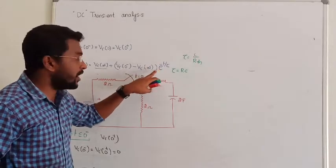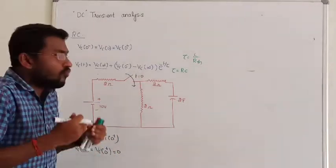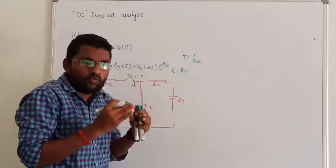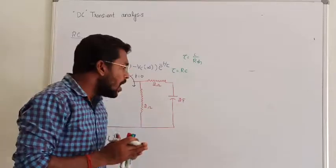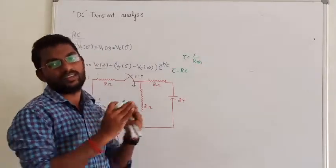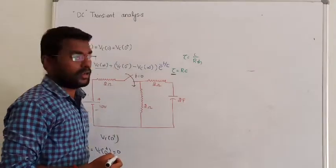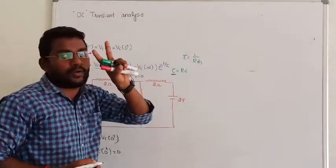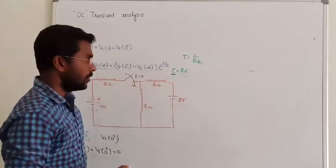To calculate these two parameters, we have to operate the switch. After some time — one second, five seconds, ten seconds — steady state at T equal to infinity will come. How will this capacitor behave? That is called steady state. The RTH can be calculated as the time constant after operating the switch. We can then calculate VC(∞) and tau.